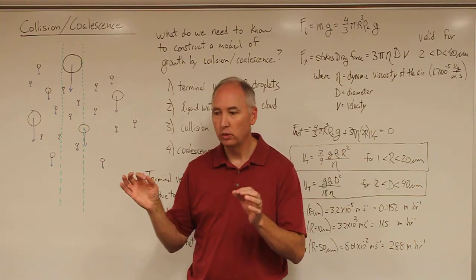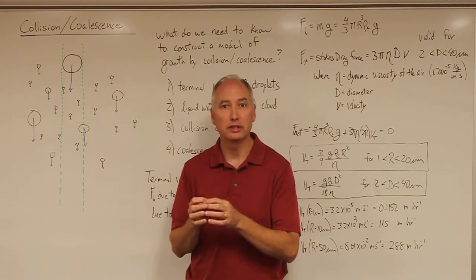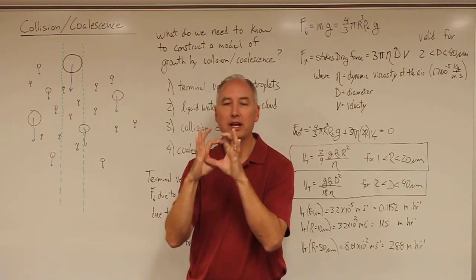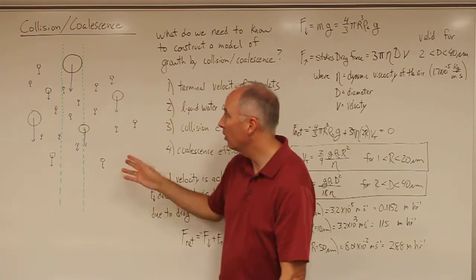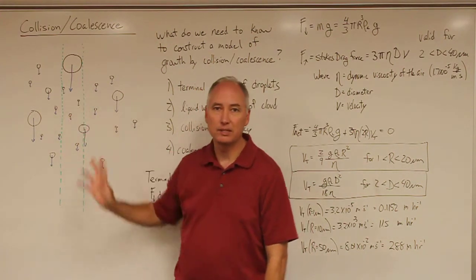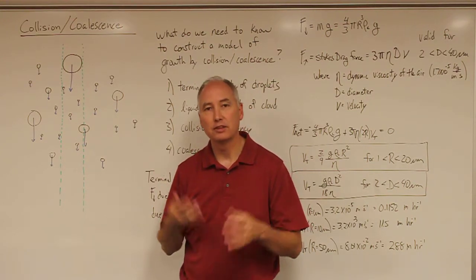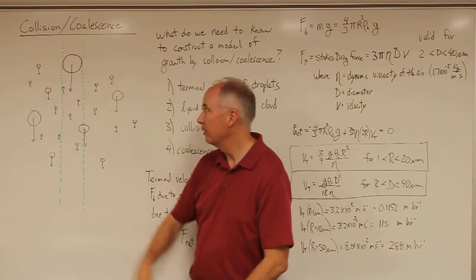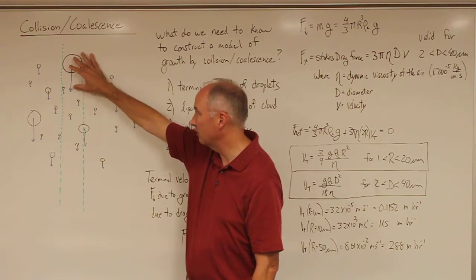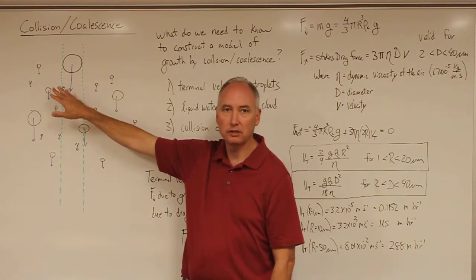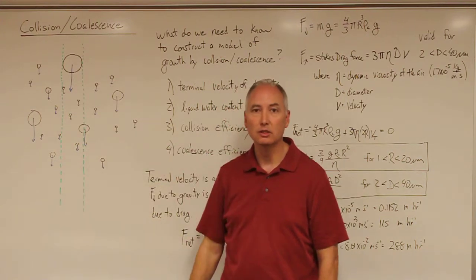Random turbulence can have two similar sized droplets run into one another, collide, and coalesce into a larger droplet. Or you can also have slight differences in the fall velocity of those droplets. If you have differences in the fall velocity, then the larger droplets will actually fall faster and will overtake the smaller droplets that have a smaller terminal velocity.